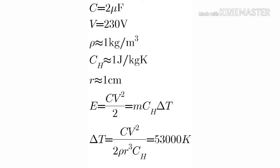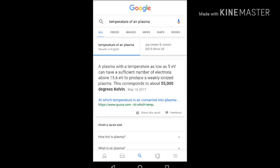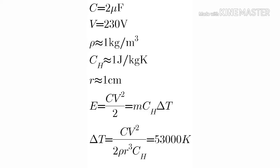Now I found on Google that 55,000 degrees Kelvin is required to turn a gas into plasma, which is closer to what I got. For a one centimeter cube, see it's almost one centimeter cube.